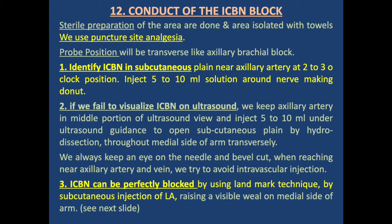Conduct of the block: prepare the external area and isolate with towels. Apply puncture site analgesia. Probe position is transverse as in axillary brachial plexus block. Identify the intercostal brachial nerve in the subcutaneous plane near the axillary artery at the two to three o'clock position. Inject 5–10 ml of local anesthetic solution around the nerve making a donut — this is Technique 1. Alternatively, if the nerve cannot be visualized, keep the axillary artery in the middle of the ultrasound view and inject 5–10 ml to open the subcutaneous plane by hydrodissection on the medial side of the arm, above the deep fascia — Technique 2. Always keep an eye on the needle and Doppler when approaching the axillary artery and vein to avoid intravascular injection.